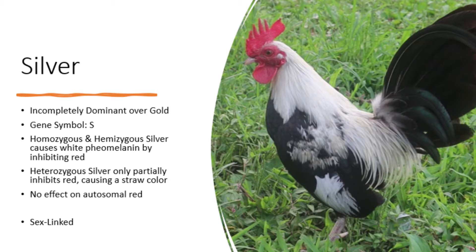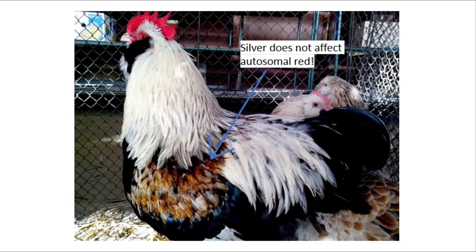Starting with the silver allele: the silver allele is incompletely dominant over gold and is denoted by a capital S. Birds that are pure for silver should have nearly white femelanin. The silver gene works by inhibiting the red pigment, causing the white, which is the absence of color. It is important to keep in mind though that the silver gene has no effect on autosomal red, which I will talk about more in a bit.